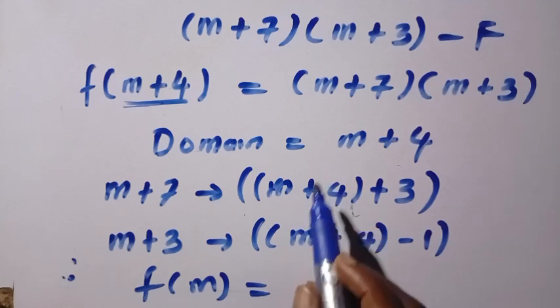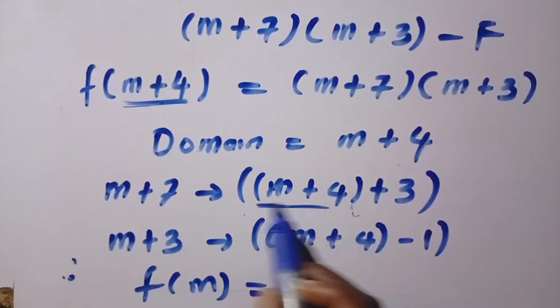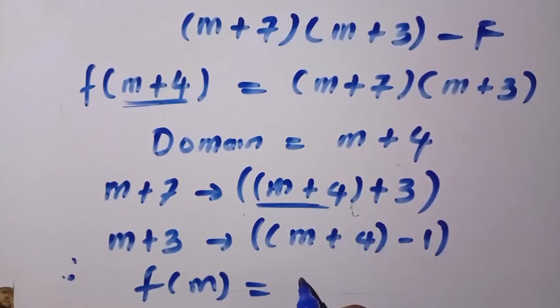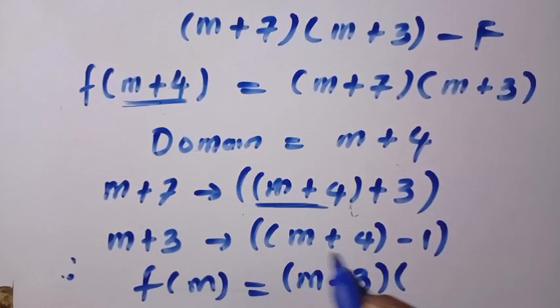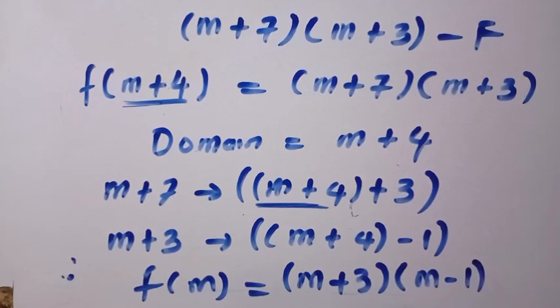It equals the first one which is m plus 7. We have m plus 4 here. Then we change it to m, then plus 3 in the bracket. And also the second one which is m plus 3, which has changed to m plus 4 minus 1. So that one also becomes m minus 1.